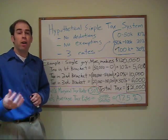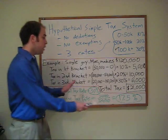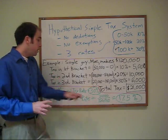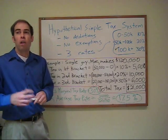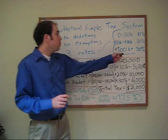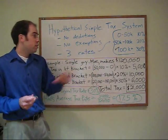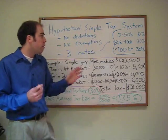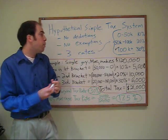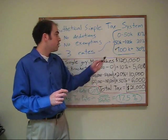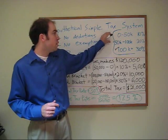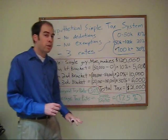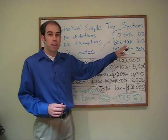As Moe's income goes higher and higher, these two rates will approach one another. If Moe were a millionaire, they would be very similar because a lot of his income would be taxed at the top rate, with only a small portion taxed at the bottom two rates. However, since Moe is barely in the third bracket, most of his income is still taxed at the bottom two rates, which is why his average tax rate is significantly lower than his marginal tax rate.